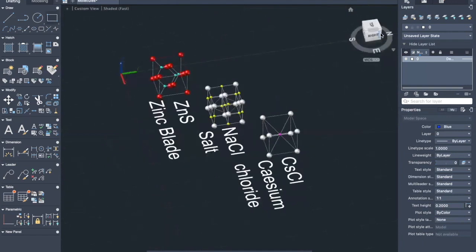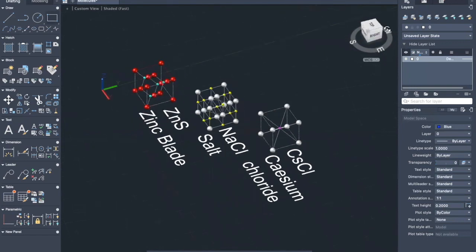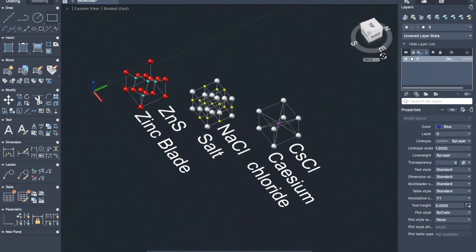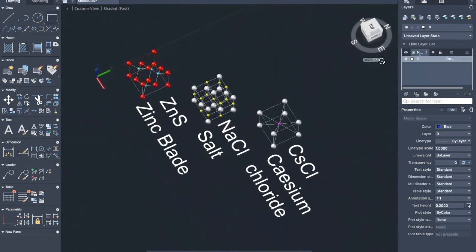Lastly, for our third structure, we have cesium chloride. It is in the form of a simple cubic structure. Same as salt, it doesn't depend whether we have the chloride in the center or the cesium in the center. However, cesium chloride is more stable than NaCl.